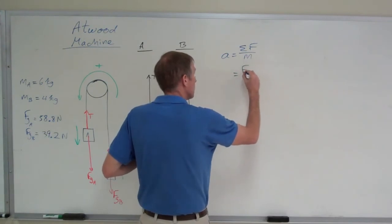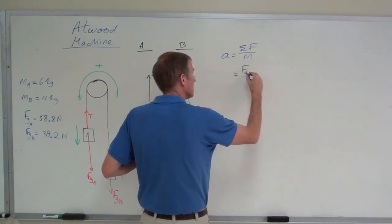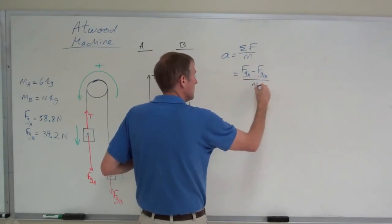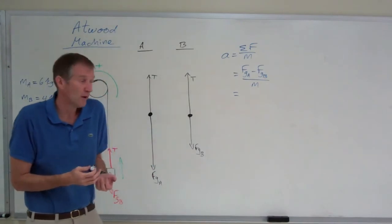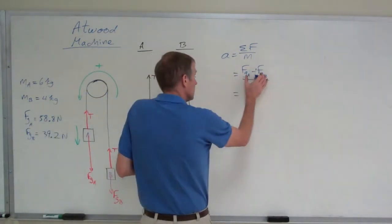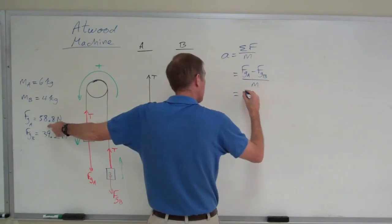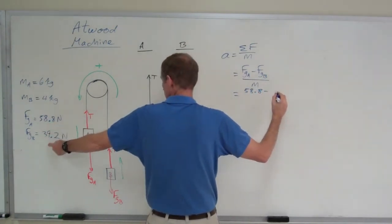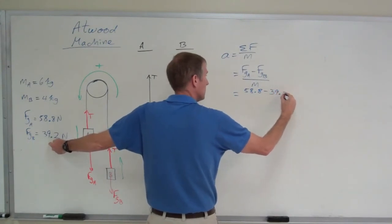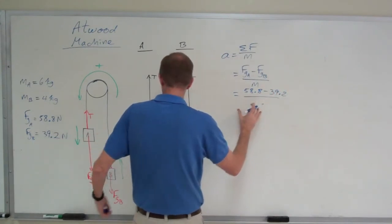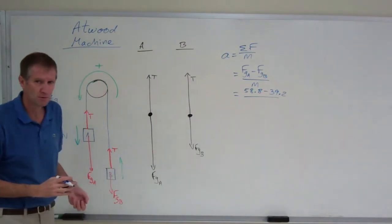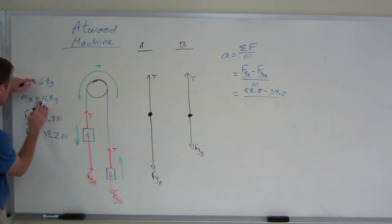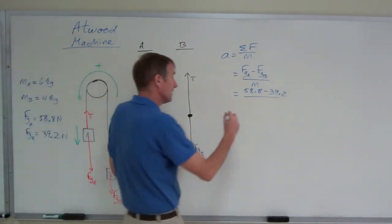It's the difference between the weights. Subtract the larger weight minus the smaller weight to give yourself a positive acceleration divided by the mass of everything accelerating. That's going to be 58.8 less the weight of B, 39.2, all over the mass of everything accelerating. Add them up. Don't subtract them. Sometimes people do that. Add up the masses, right? You have 6 plus 4 is 10 kilograms accelerating.